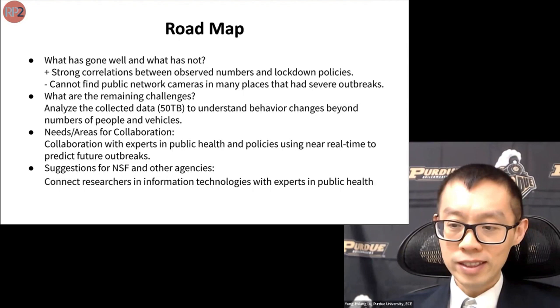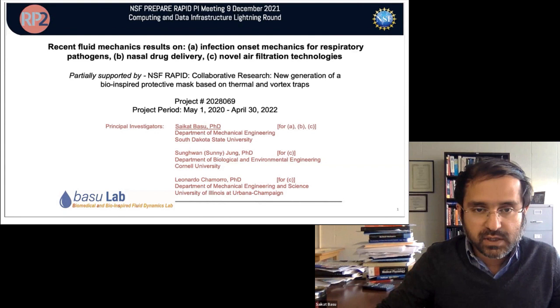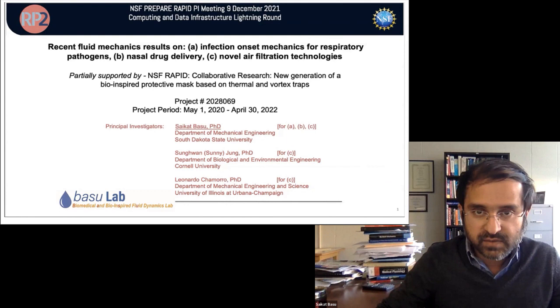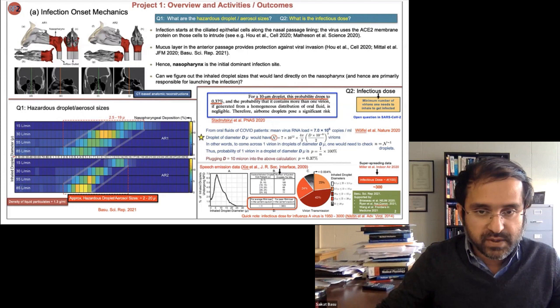Today I'm going to discuss fluid mechanics results from my lab on respiratory transmissions, covering three topics: the mechanics of infection onset, drug delivery, and filtration. The filtration project was funded by the RAPID mechanism in collaboration with Sangwan Jung from Cornell University and Leonardo Chamorro from UIUC. For infection onset, I pose two specific questions: what are the bad droplet or aerosol sizes responsible for triggering infection, and what is the infectious dose — the minimum number of virions that can launch infection in an individual?